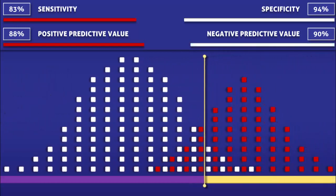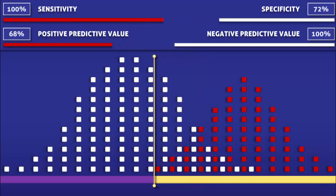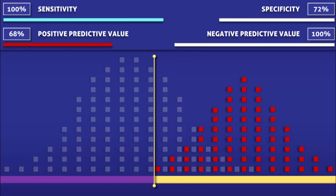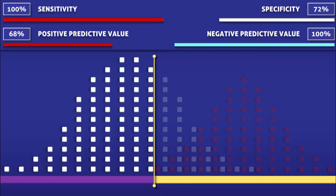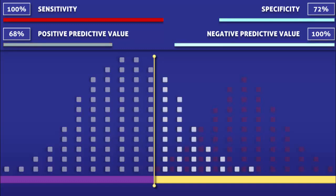Now that we have made these four calculations, let's see what happens when the cutoff level for a positive test is shifted to the left. The test now has 100% sensitivity because everyone with the condition tested positive. The test also has a 100% negative predictive value because not a single person with a negative test had the condition. The specificity and the positive predictive value, however, have decreased because the number of false positives has increased.